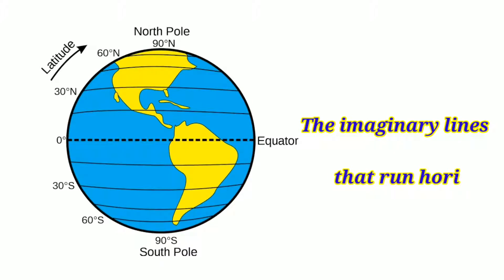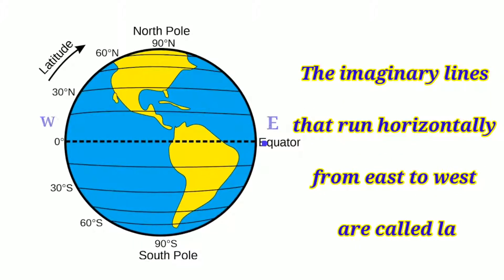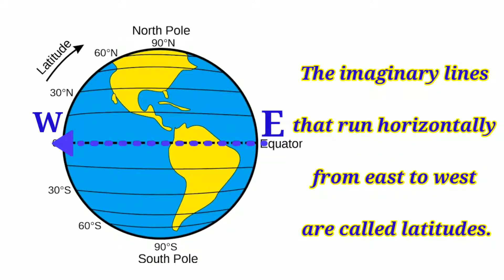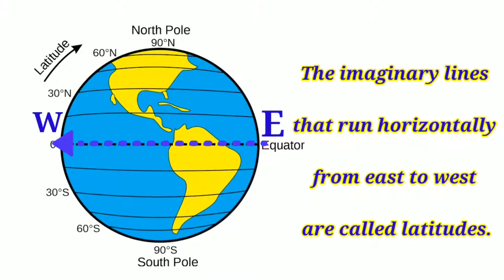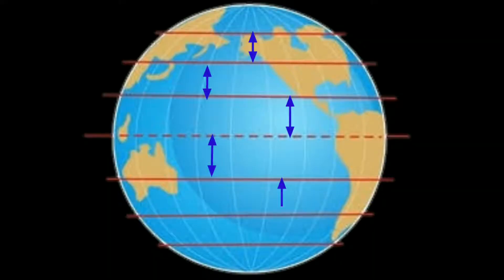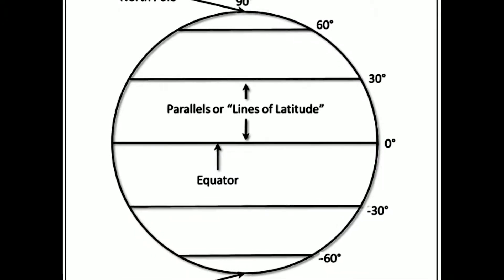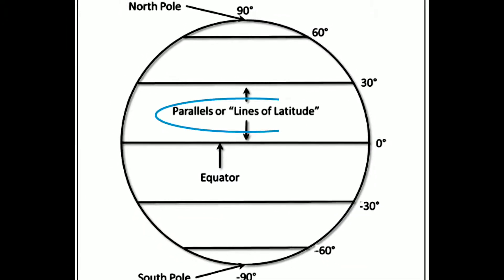The imaginary lines that run horizontally from east to west are called latitudes. The distance between the latitudes always remain constant. Hence, they are also known as parallels.